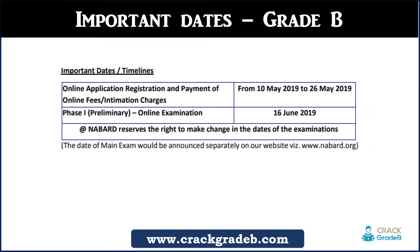For the Grade B examination, the form filling date is the same as Grade A — you can fill the form between 10th May to 26th May. But Phase 1 exam will happen for Grade B on 16th June. For Grade A, the exam will happen on both 15th and 16th June. The mains date would be announced separately on the website after Phase 1 examination.